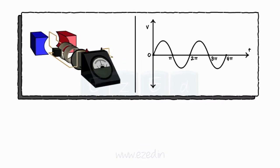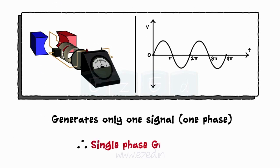We have already studied the AC generator. As it generates only one signal, it is called the single phase generator.